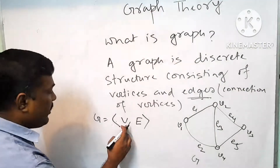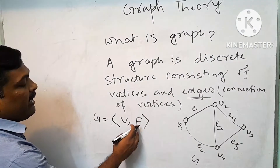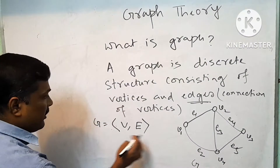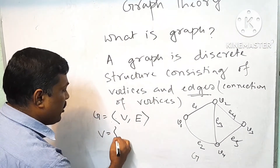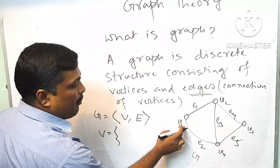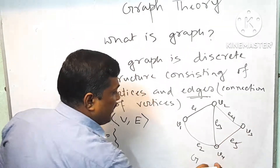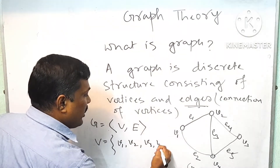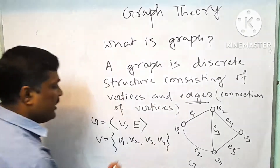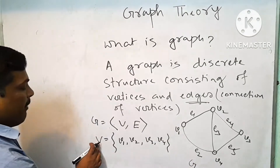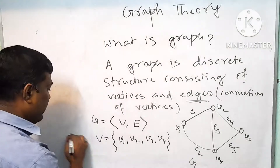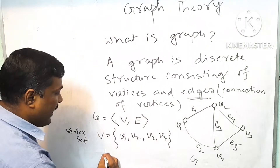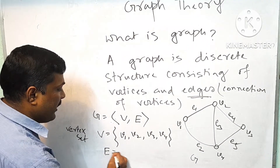What is V? V is the set of all vertices, and E is the set of all edges. Suppose this is the graph G. Here V equals to the set of all vertices. The vertices are V1, V2, V3, V4. This is the vertex set V.